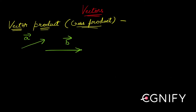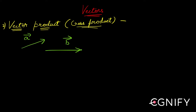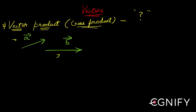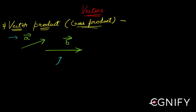Now we are done seeing what scalar product of two vectors was. We will now come to the next type of product — the vector product. So coming back to the same question: I have two vectors a and b. Can I multiply them? Scalar product was one way. When scalar product was performed on two vectors, the output was a scalar — a real number. We were associating two vectors and their product to some real number.